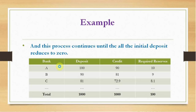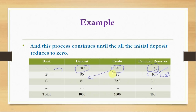This process continues until the deposit amount reduces to zero. We can summarize the process in a table: Bank A has an initial deposit of $100, divides into $10 (to the central bank) and $90 (as credit). That $90 is deposited in Bank B, which sends $9 to the central bank and lends $81. That $81 is deposited in Bank C, which sends $8.1 to the central bank. This continues until the sum of required reserves reaches $100 or the total credit created reaches $1,000.